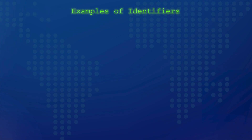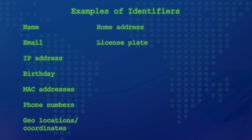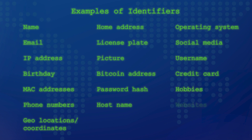Identifiers are unique keywords or tokens that describe a piece of data. Some examples include name, email, IP address, birthday, MAC address, phone numbers, GPS locations and coordinates, home address, license plate, pictures, Bitcoin addresses, password hash, hostname, operating system, social media, username, credit card, hobbies, and website.